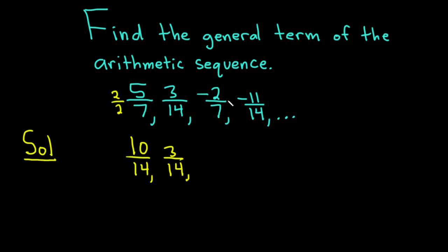The third term, we can again multiply it by 2 over 2, so it would be negative 4 over 14. The next one would be negative 11 over 14. And then the three dots indicate that it goes on forever.